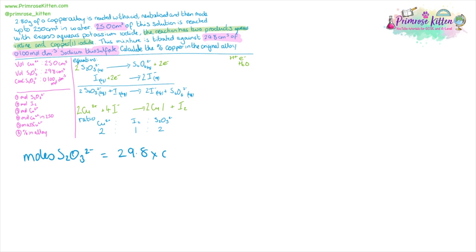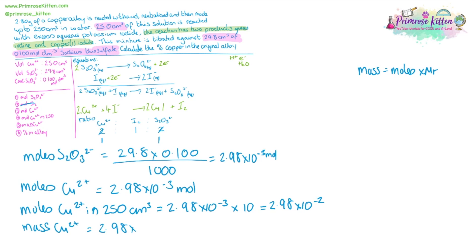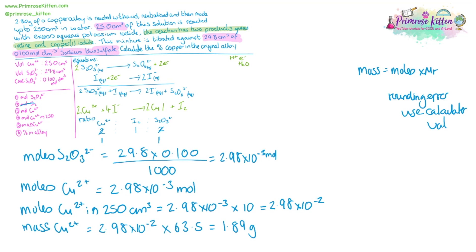For our moles of thiosulfate, volume times concentration over 1000 gives us 2.98 × 10⁻³ moles. Moles of copper, because it's in a one-to-one ratio, are exactly the same. We used 25 cm³ in our titration, so to scale back up to 250 cm³ we multiply by 10. To find the mass of copper in the original alloy, we take the number of moles and multiply by the atomic mass of copper from the periodic table, giving us 1.89 grams. Now use the full calculator value for this — not the rounded figure — to avoid rounding errors. So 1.89 ÷ 2.80 × 100 gives us 67.6%.